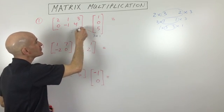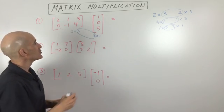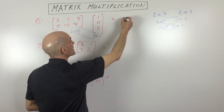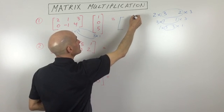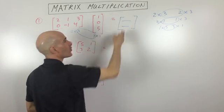You can see the inner dimensions they match. We're going to end up with a two by one matrix. So what I normally do is I like to draw the matrix. So it has two rows and one column. So two rows, one column.